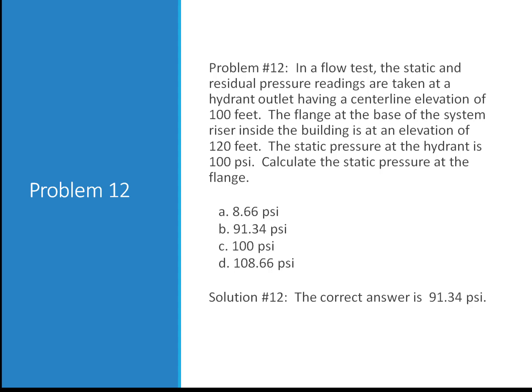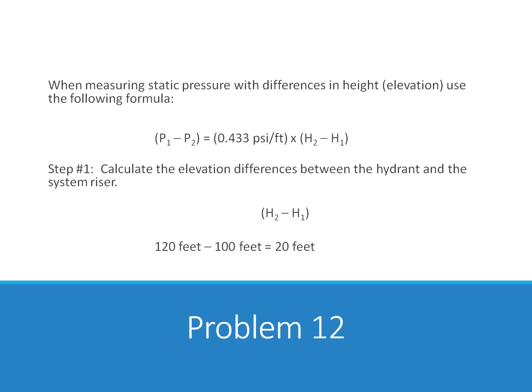Solution to problem number 12. The correct answer is 91.34. When measuring static pressure with differences in height elevation, use the following formula: P1 minus P2 is equal to 0.433 PSI per foot times H2 minus H1. Step 1, calculate the elevation differences between the hydrant and the system riser: 120 feet minus 100 feet equals 20 feet.